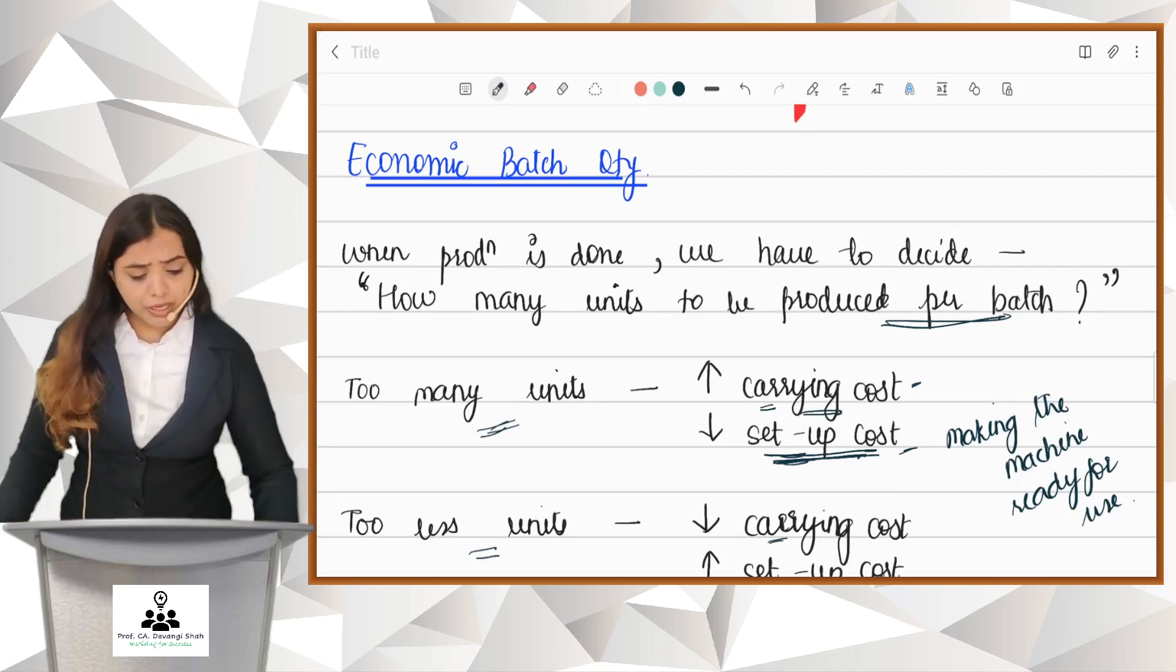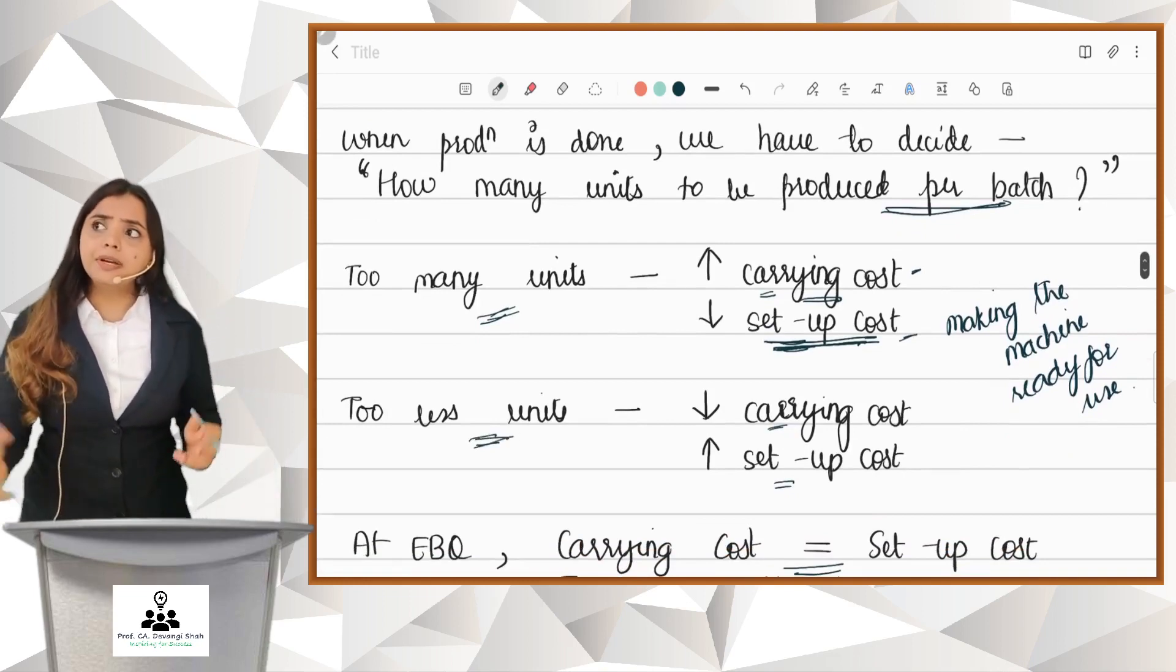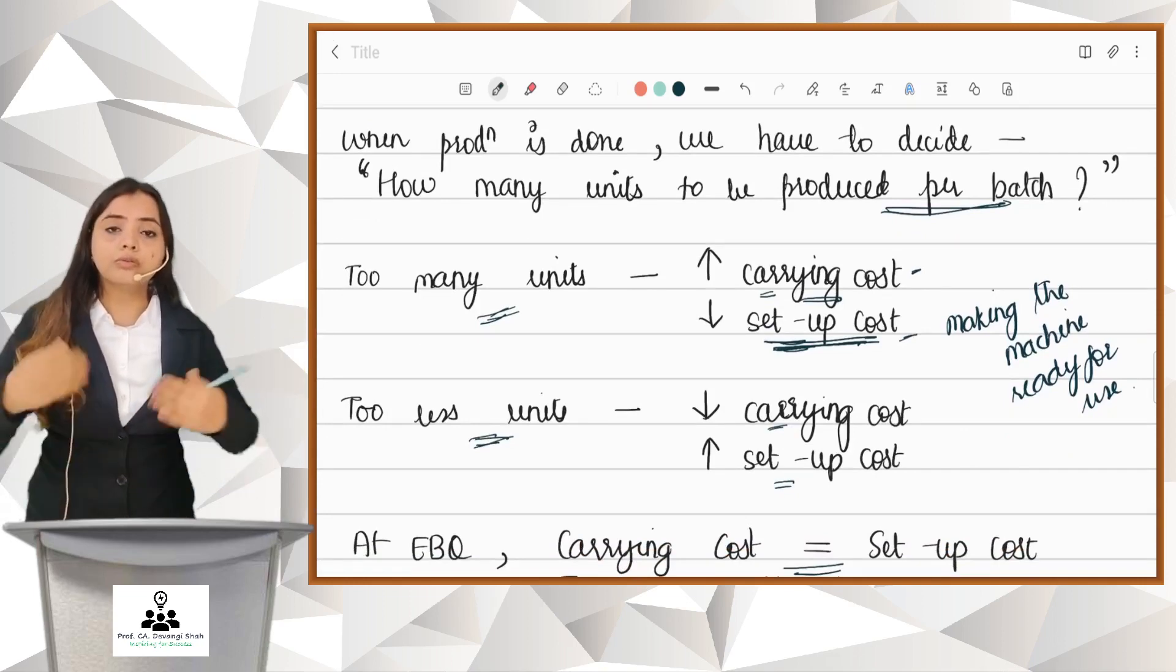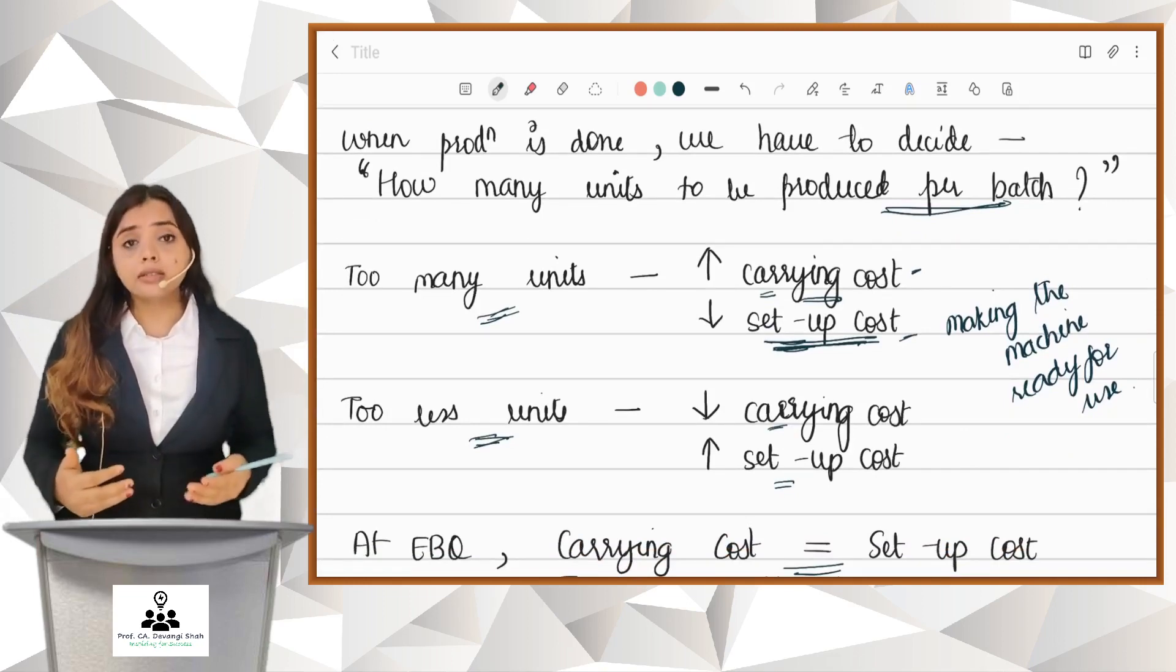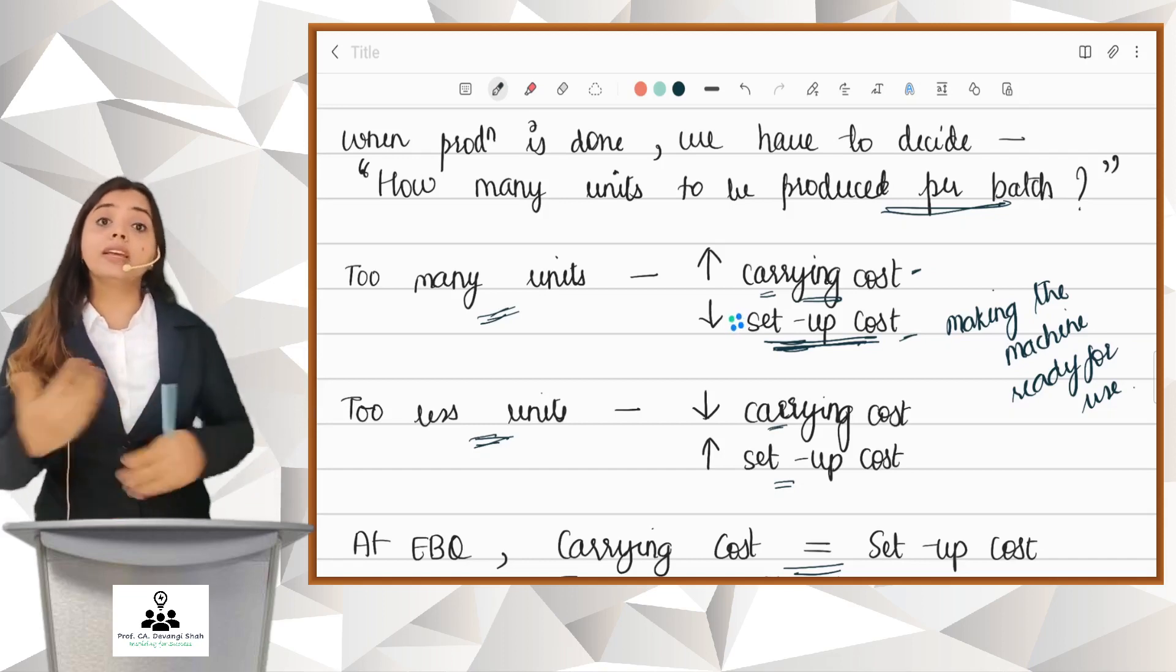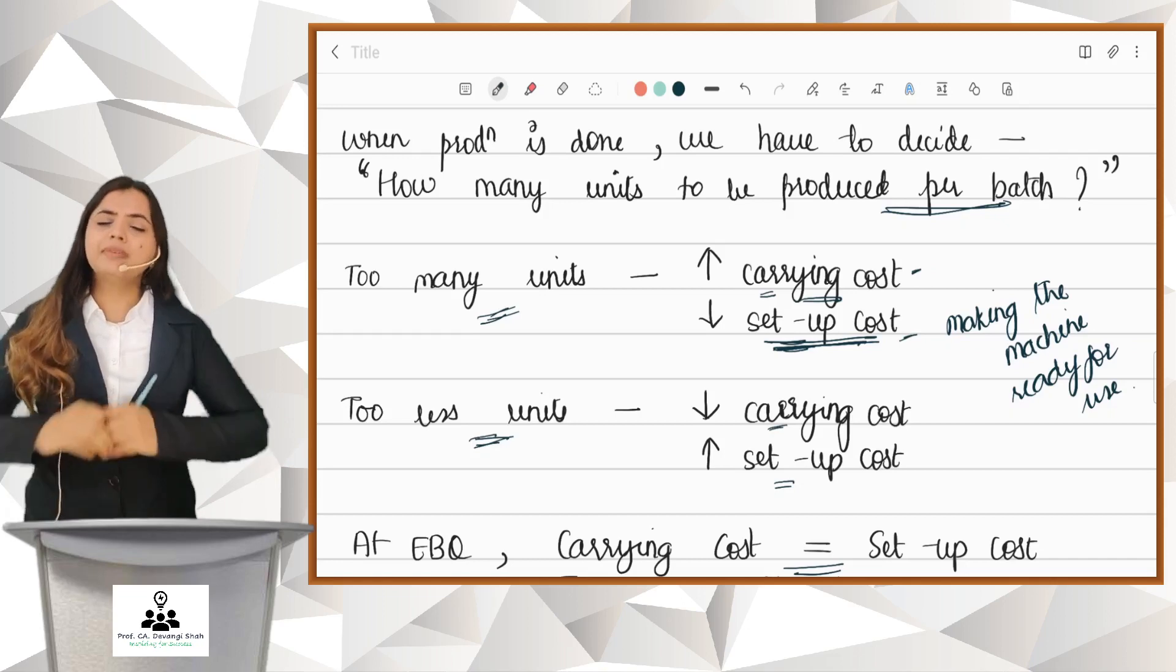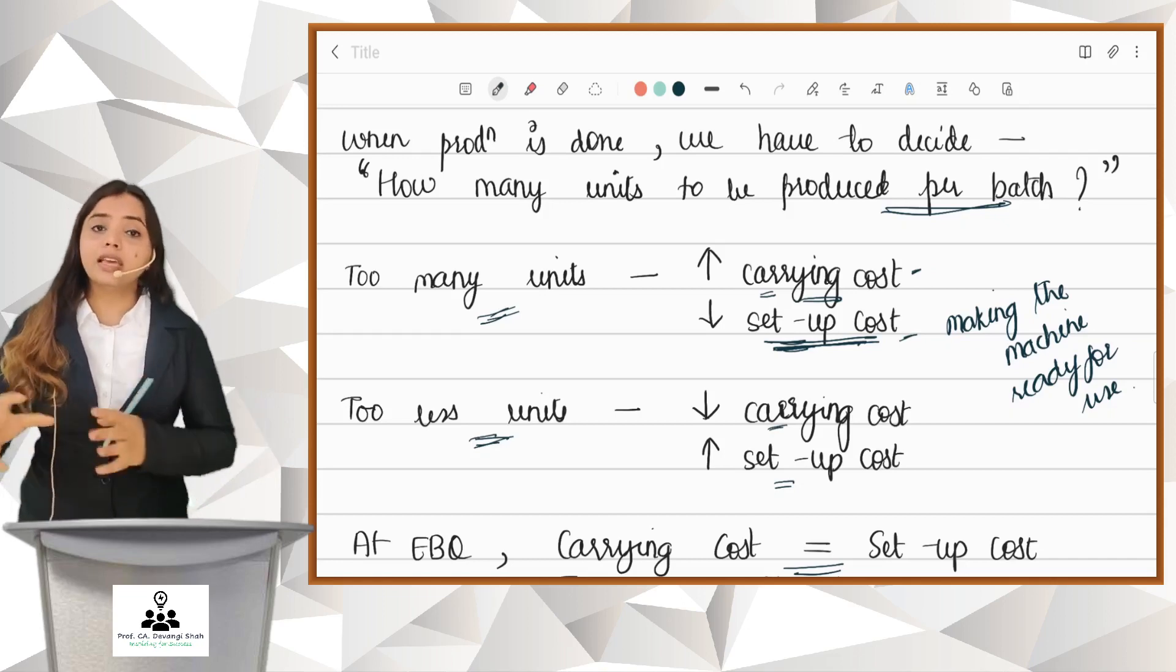Now if I think reverse - let me produce too few at a time, let me produce only five units, ten units at a time - in that case, what will happen? I will have to continuously do the setup. So the number of setups will increase and my setup cost will increase. But there will be no inventory or maybe there will be less inventory, so I can save on carrying cost.